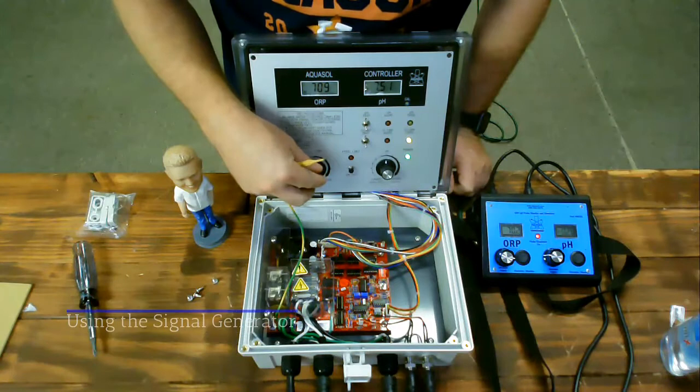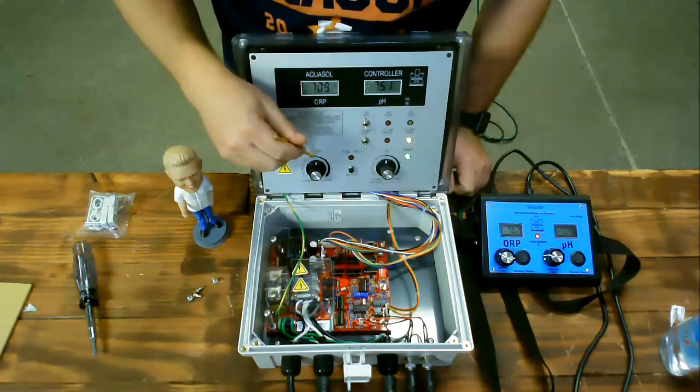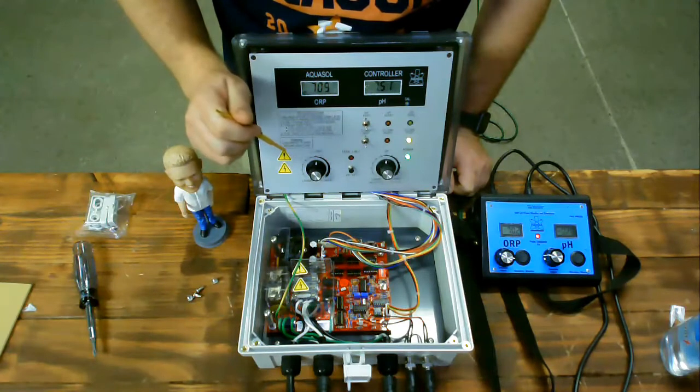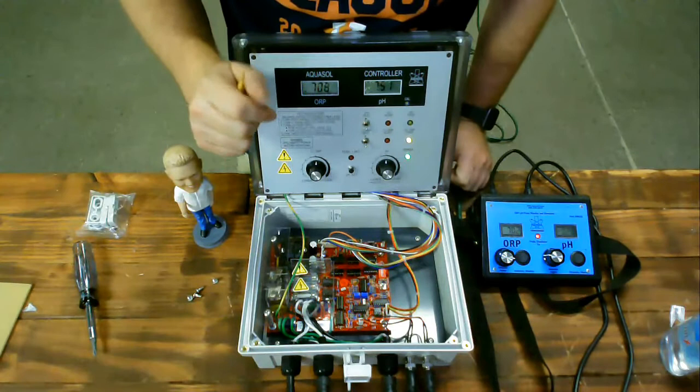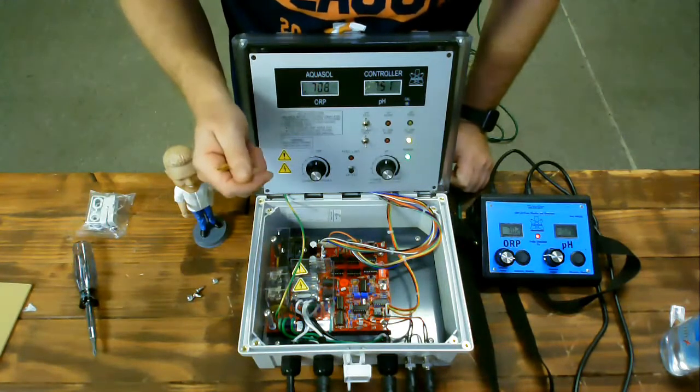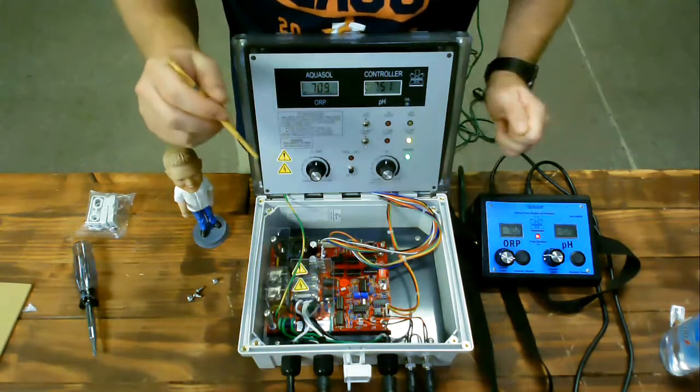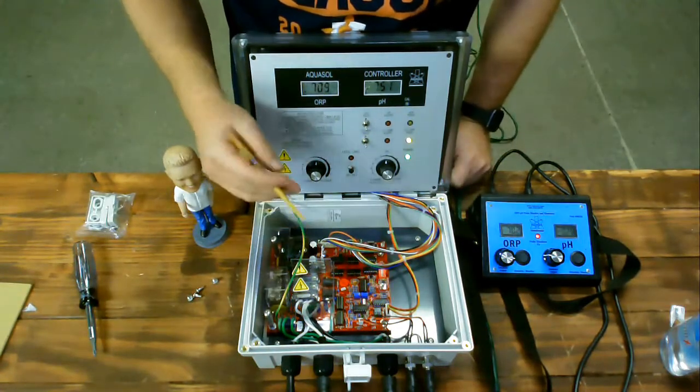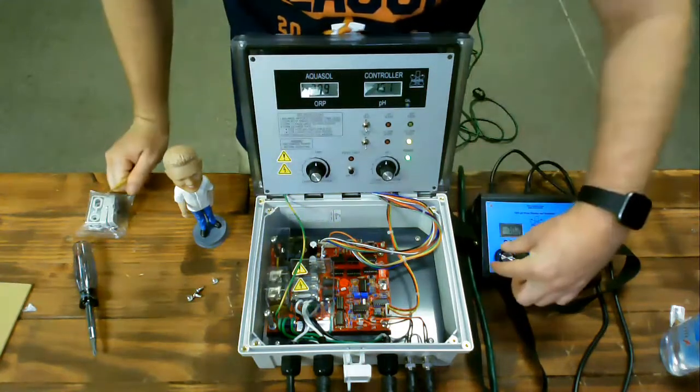Next, we'll be discussing adjusting the set points using the signal generator. Before the signal generator was introduced, technicians would have to adjust set points by moving the knob, the number of millivolts offset they would like, from what the probe was generating. Now, with the signal generator, we can simply send a signal for the exact set point we're looking for and adjust the controller to turn on and off at that point.